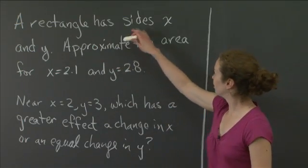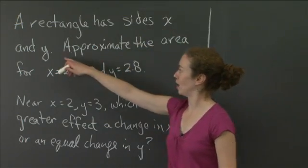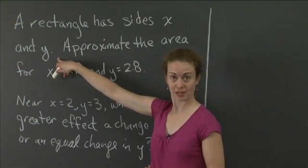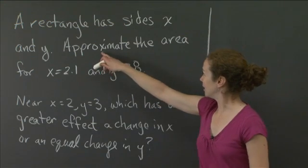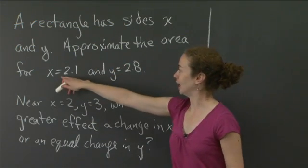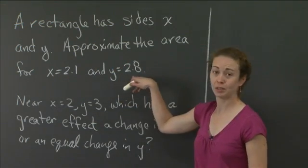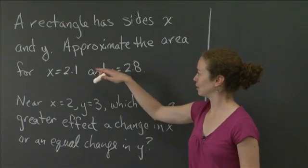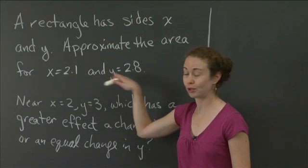So we know that a rectangle has sides x and y. And we know that to find the area of the rectangle, we just take x times y. And I would like us to approximate the area for x equal to 2.1 and y equal to 2.8. And obviously, with this type of equation, it's not hard to just compute this.